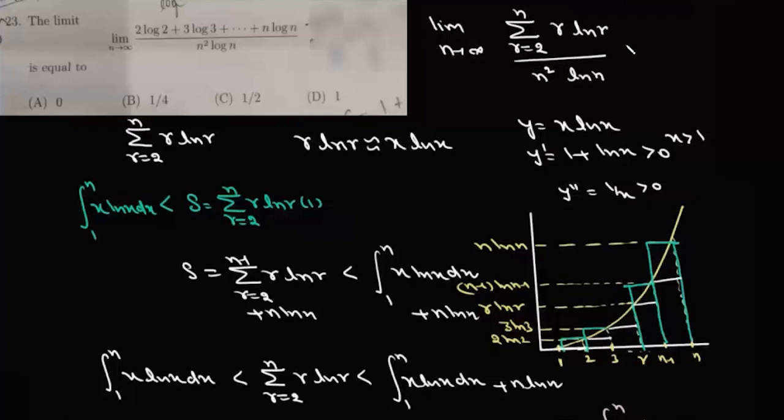Now had it been log(r/n), this problem would have been reduced to integral form. But in this case we have log(r) upon log(n) and not log(r/n), so we cannot directly change it to integral form.